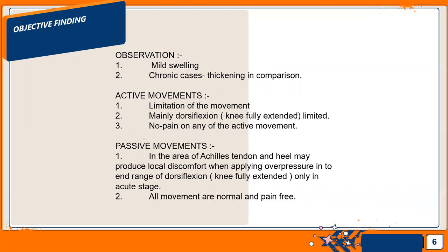Then objective findings. In objective findings, first is the observation part, like mild swelling. Second, in chronic cases, there is thickening in comparison. You always know that you have to test your knee or ankle or any body part, and you have to compare it with the other body part. So you will compare and you will get thickening. If the patient is affected on the right side, then you see that the left side and right side are varied in chronic cases.